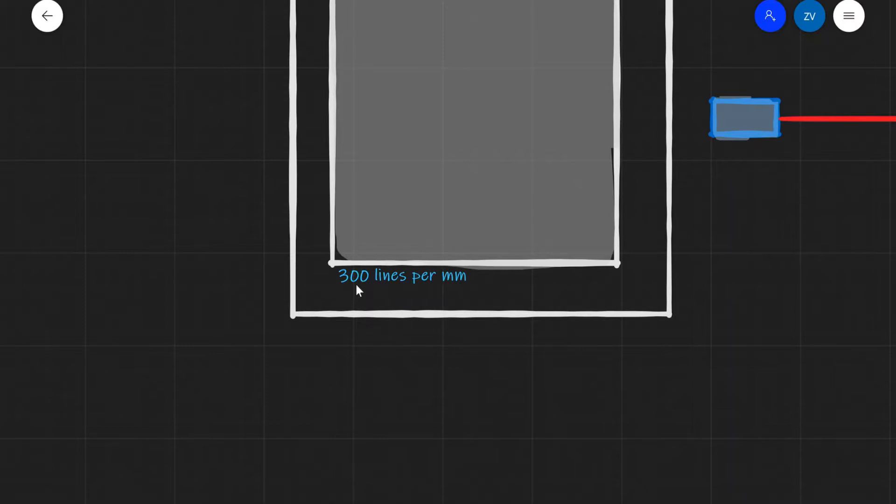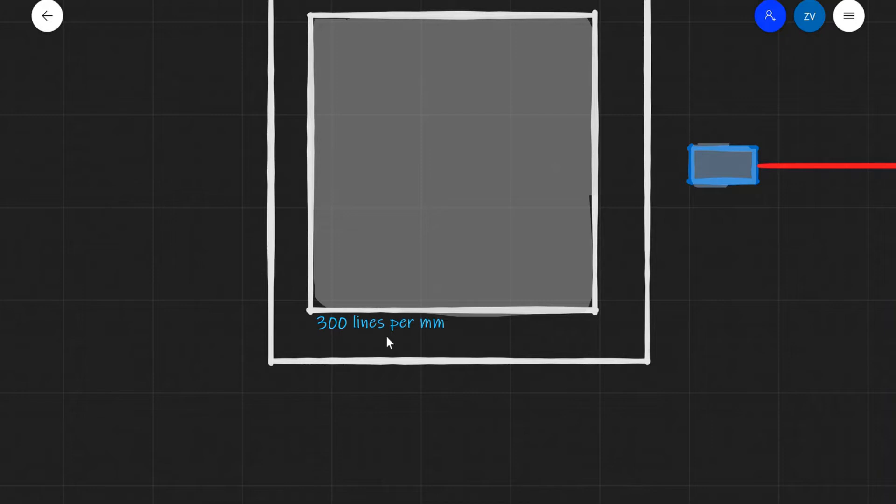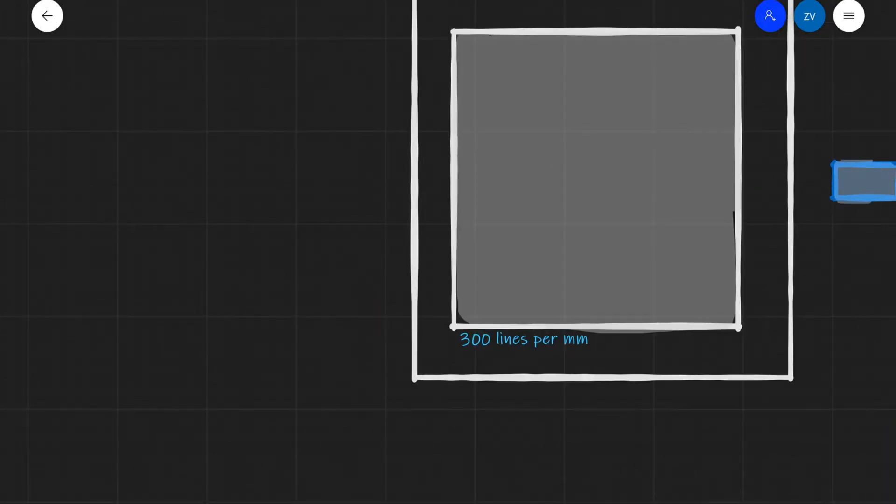Most diffraction gratings have a label on them. For example, this one says 300 lines per millimeter, which means 300,000 lines per meter. This is simply because there are 1,000 millimeters in a meter.